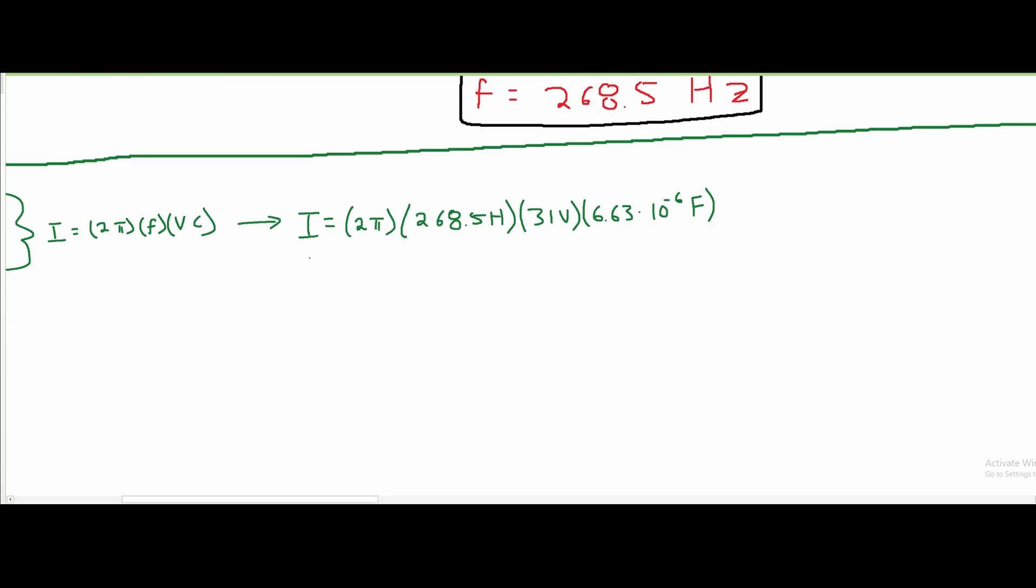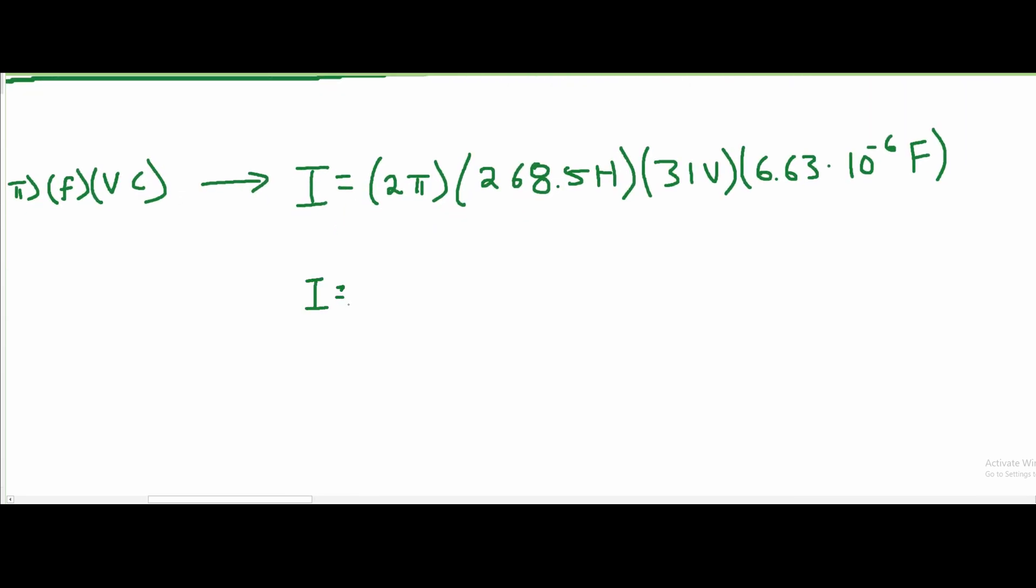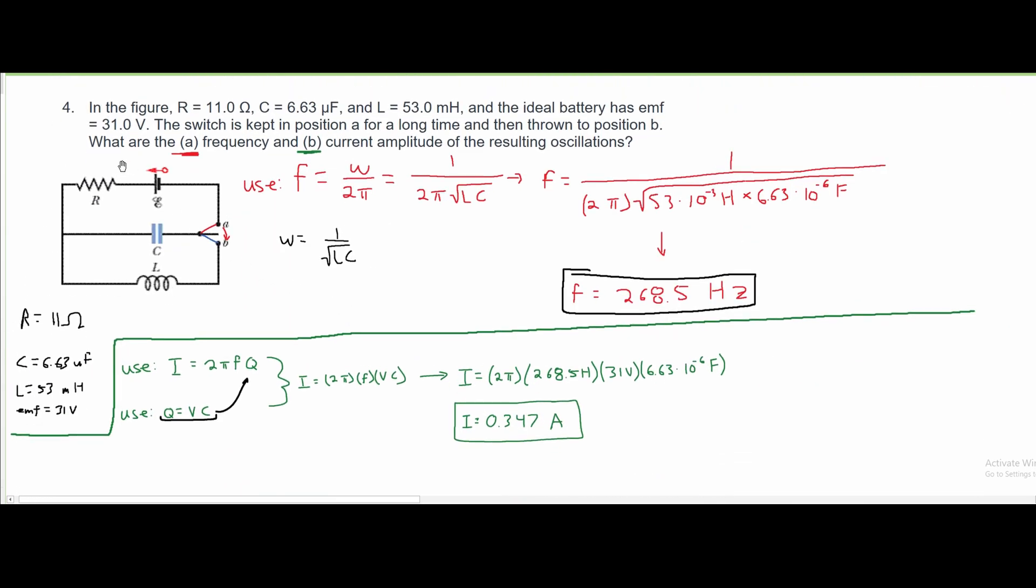we're going to get I equals 2 pi times 268.5 hertz times 31 volts times 6.63 times 10 to the negative 6 farads. And after we plug this into our calculator, we're going to get approximately 0.347 amps. So this is going to be the answer for part B, which asks us what is the current amplitude of the resulting oscillation. And that was our amplitude. Part A asks us for the frequency, and we found the frequency.